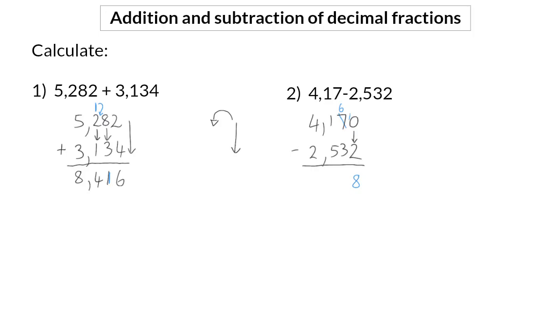Next, I have 6 minus 3, which is 3. And for my tenths, I'm once again going to have to borrow from my units, which will now become 3. And this means I'll have 11 tenths minus the 5 to get to 6 tenths. Lastly, 3 minus 2 is 1.